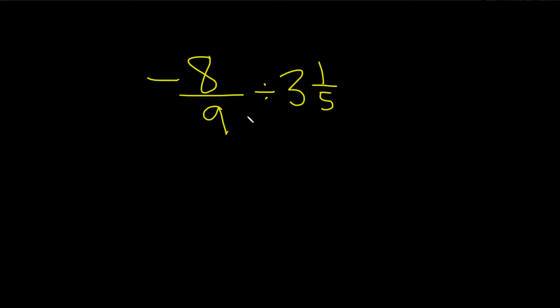Negative 8 over 9 divided by 3 and 1 fifth. So before we do the division, we have to turn this number into a fraction.